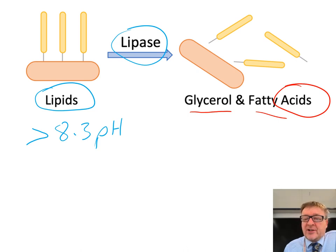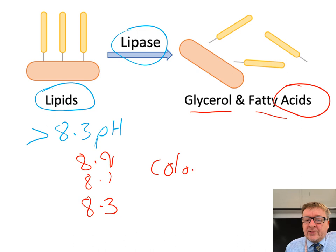As acids are produced, the pH is reduced. It might start at 8.9, then go to 8.7, 8.6, etc. As soon as it gets below pH 8.3, the phenolphthalein loses its color. That's the point when the practical is finished.